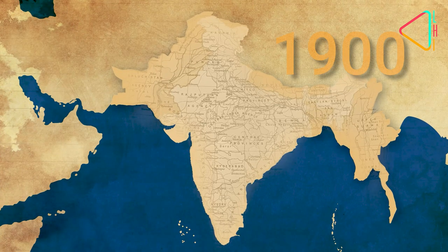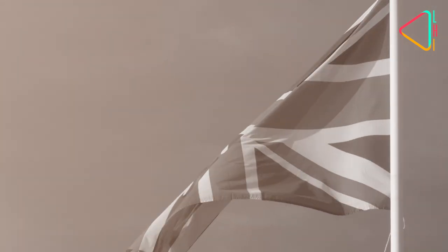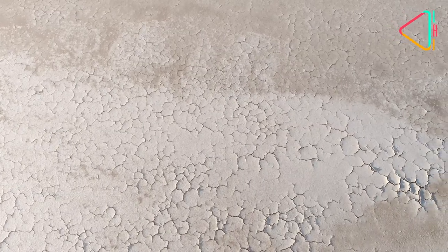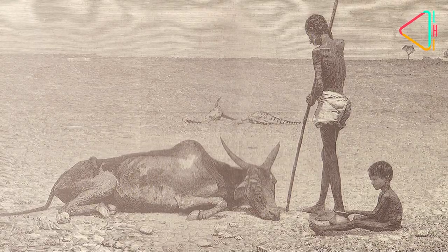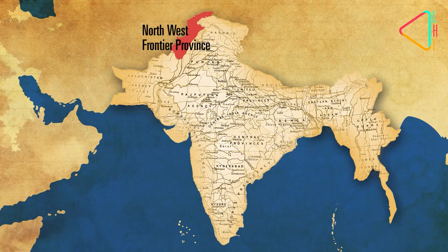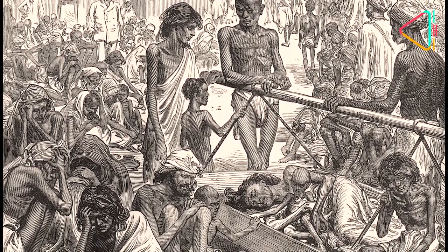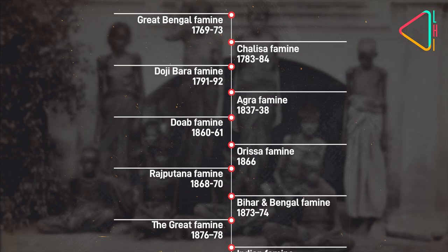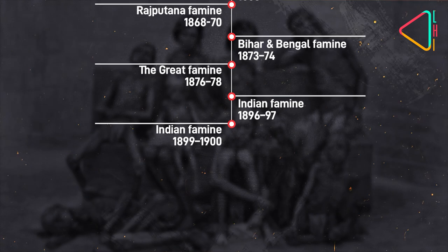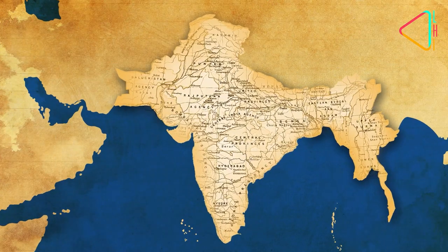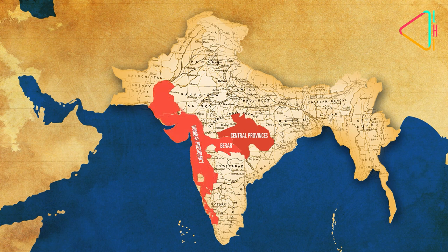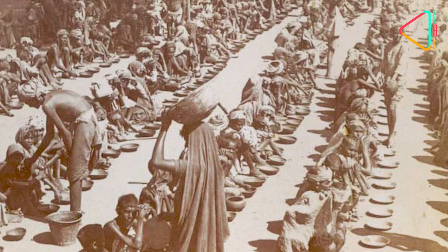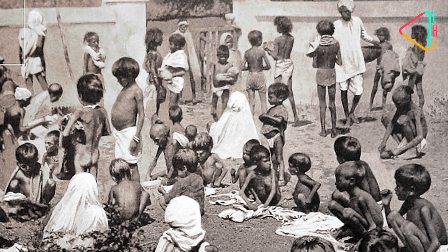In 1900, the Indian subcontinent opened the new year bruised and battered. Nearly 150 years of British rule had resulted in an unprecedented loss of lives and wealth. Millions had died in famines stretching across India from Bengal to the Northwest Frontier Province and the Deccan. The last of the great famines of the 19th century was in 1899, triggered by a failed monsoon and subsequent drought. Large tracts of the central provinces, Berar, and the Bombay Presidency were impacted. While there are no records of exactly how many died, it is estimated that over a million people lost their lives.